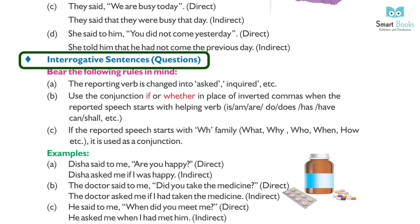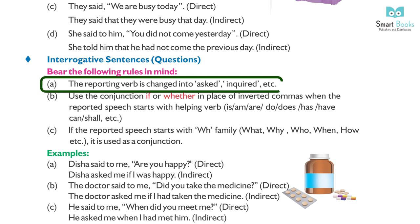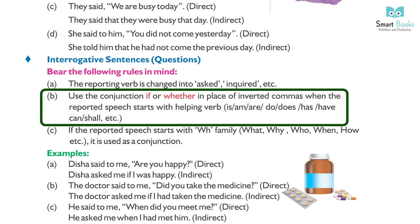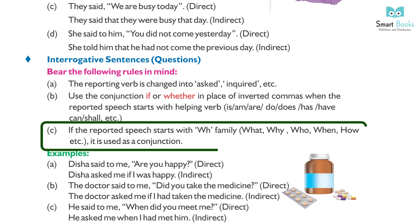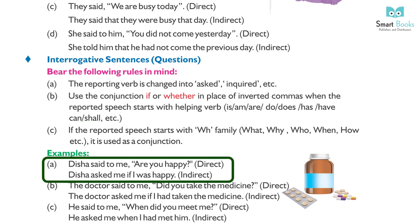Interrogative sentences — keep the following rules in mind: (a) The reporting verb is changed to 'asked', 'inquired', etc. (b) Use the conjunction 'if' or 'whether' in place of inverted commas when the reported speech starts with a helping verb (is, are, do, does, has, have, can, shall, etc.). (c) If the reported speech starts with a wh-word (what, why, who, when, how, etc.), it is used as a conjunction.